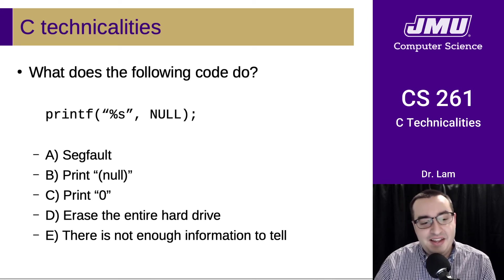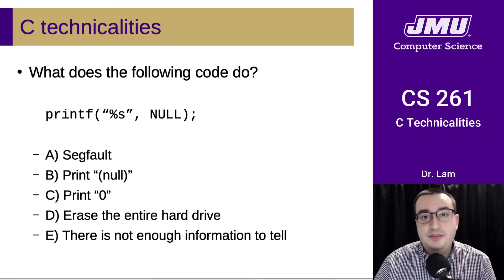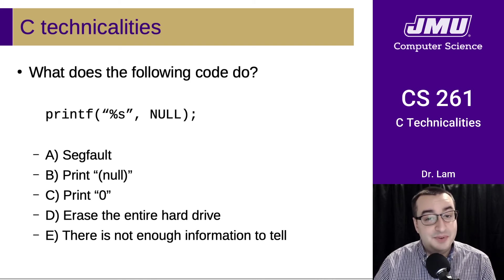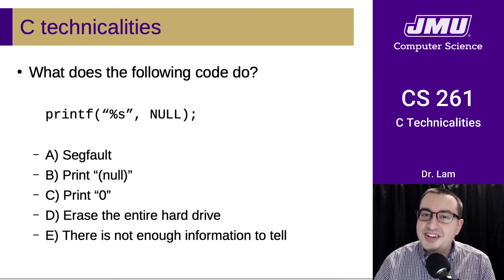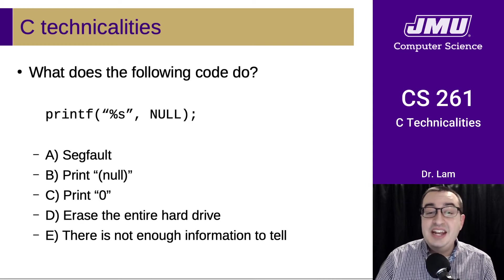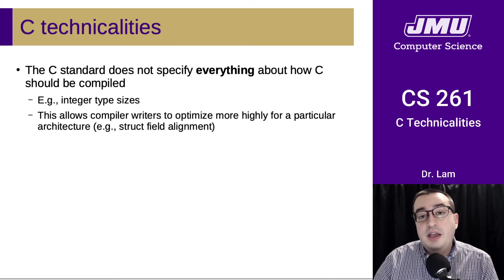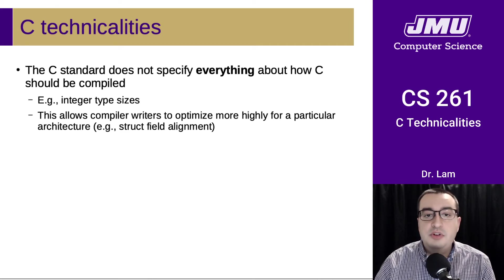In general, if you're attempting to dereference a null pointer, you'll get a segfault — we talked about that. So option A (segfault) is entirely a reasonable answer. If you tried this on an actual system, on 'stew' you'll actually get B — it will print null in parentheses. But in fact the correct answer is E: there's not enough information to tell. It could potentially be any one of these. This highlights an issue with having a standardized language like C, in that the C standard doesn't specify everything about how C should be compiled — as we've already seen with respect to integer types, where the standard specifies minimum sizes but not exact integer sizes.